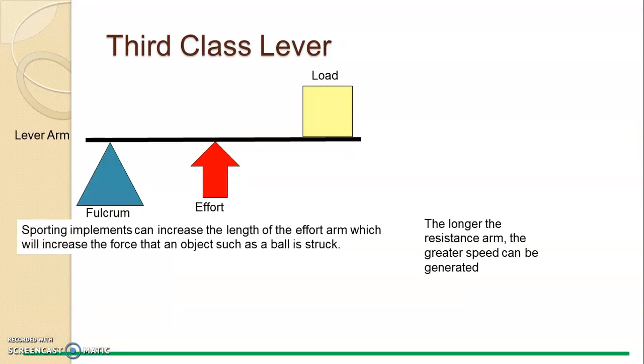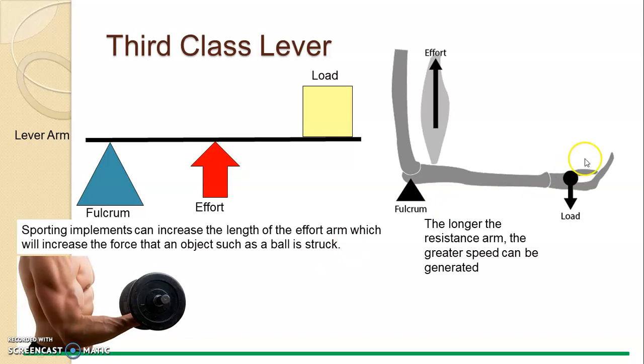The third class lever we use as the bicep curl. Remember, effort is in the middle with attachment of the tendon onto the radius and ulna. And then the humerus here, so in line with the fulcrum. So with the load in the hand, we have a third class lever. The load arm is longer than the effort arm.